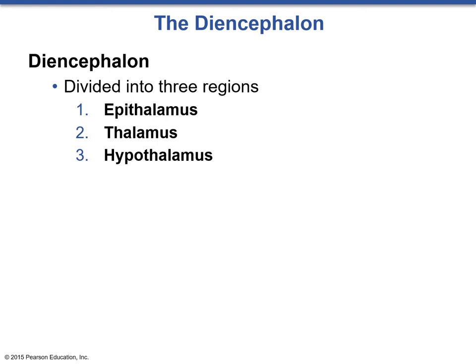It consists of three distinct regions: the epithalamus, which is going to form the roof of the third ventricle and contains the choroid plexus; the thalamus, which is going to be the main central connecting station of the brain; and then the hypothalamus, which is a very complex and essential tissue that connects inferiorly with the pituitary gland and serves a multitude of functions.